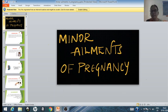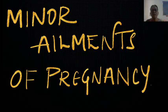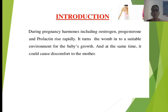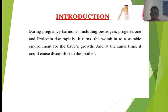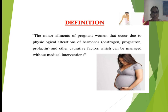Minor ailments during pregnancy are very minor problems but they may be very disturbing to the mother. They don't require any treatment or doctor attention, but with simple measures they can be reduced. During pregnancy, hormones like estrogen, progesterone, and prolactin increase in the blood, providing an environment in the womb for the baby's growth, but they may also cause a lot of discomfort. The definition: minor ailments are problems that occur due to physiological alterations of hormones and other causative factors which can be managed without medical interventions.